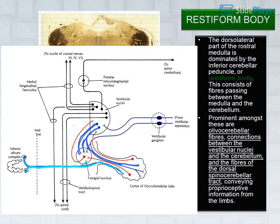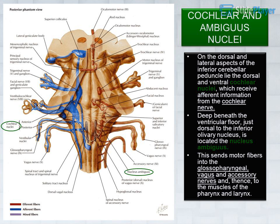The dorsolateral part of the rostral medulla is dominated by the inferior cerebellar peduncle, or restiform body, consisting of fibers passing between the medulla and the cerebellum — prominently including olivocerebellar fibers, connections between the vestibular nuclei and the cerebellum, and fibers of the dorsal spinocerebellar tract conveying proprioceptive information from the limbs. On the dorsal and lateral aspects of the inferior cerebellar peduncle lie the dorsal and ventral cochlear nuclei, which receive afferent information from the cochlear nerve. Deep beneath the ventricular floor, just dorsal to the inferior olivary nucleus, is the nucleus ambiguus, which sends motor fibers into the glossopharyngeal, vagus, and accessory nerves, innervating the muscles of the pharynx and larynx.